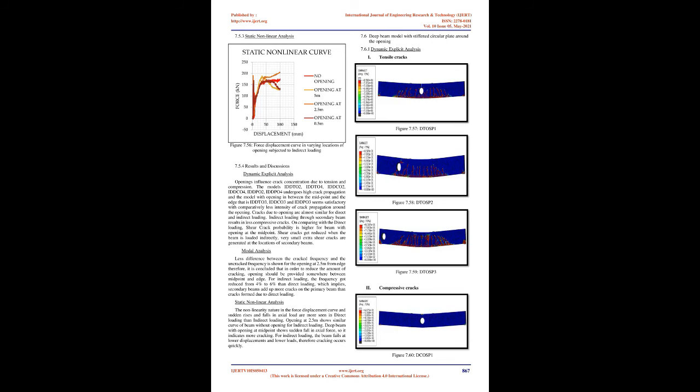Modal analysis of the first three mode shapes was analyzed. The cracked and uncracked frequencies exhibited by corresponding models were compared. For S/D ratios of 1 and 2, there is comparatively high difference between cracked frequency and uncracked frequency, while less difference is seen for high S/D ratios, especially S/D = 4. Therefore, higher the shear span to depth ratio, lesser will be the difference between the frequencies, and lesser will be the crack propagation, thereby lesser damage. This result further validates the dynamic explicit analysis.